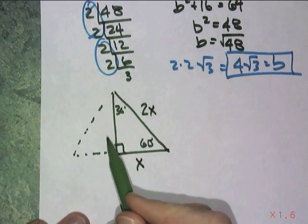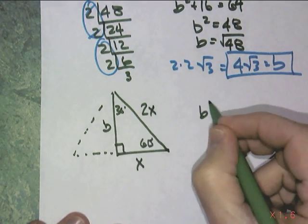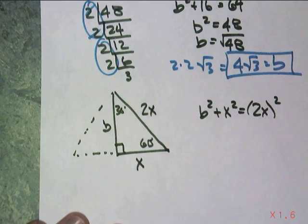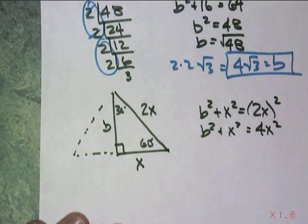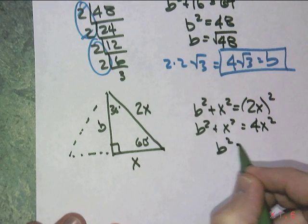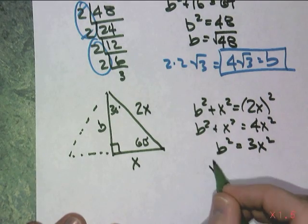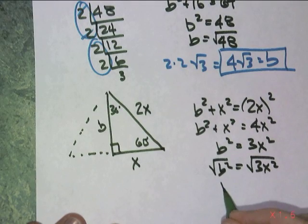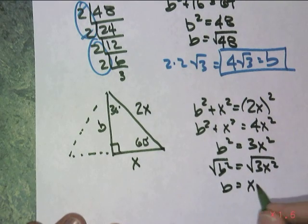And the only one that we're solving for is the altitude. So I'll just do that again. I'll call that b. b squared plus x squared equals 2x quantity squared. Be careful with your algebra. That's a 4x squared. And then subtracting x squared on both sides, I would get b squared equals 3x squared. And square root of both of them, leaving me with b must be equal to, that would jailbreak, x root 3.